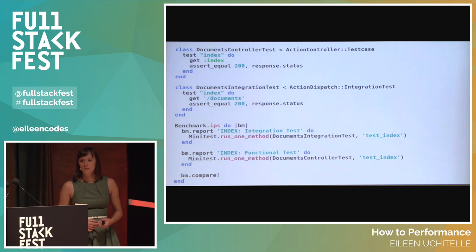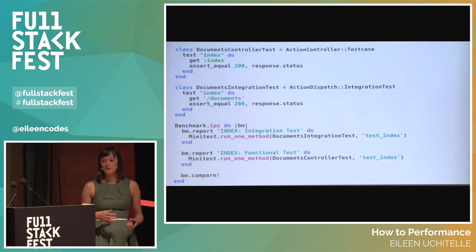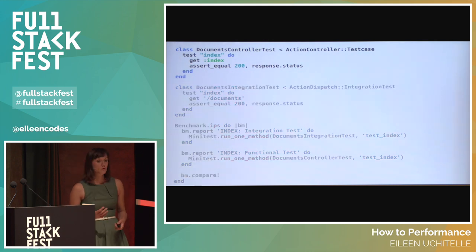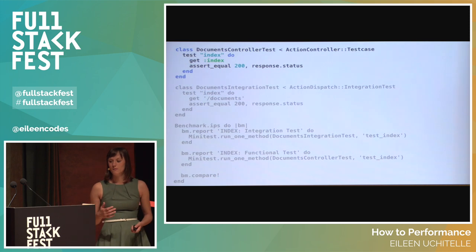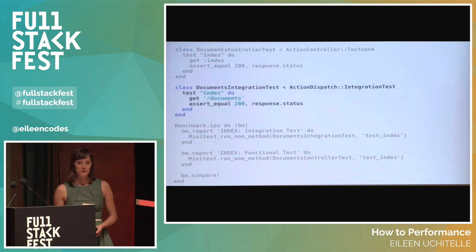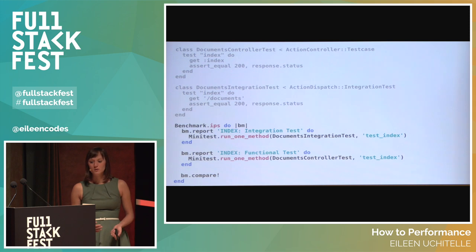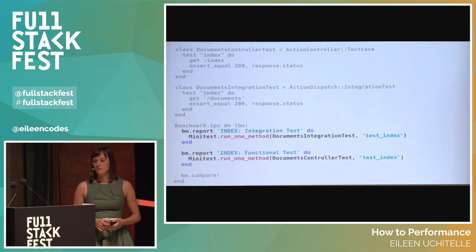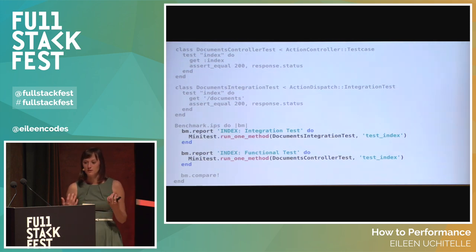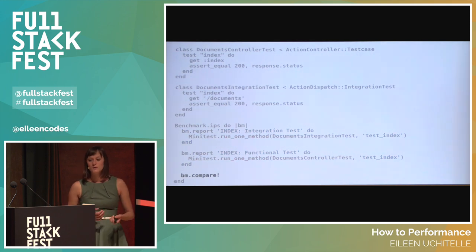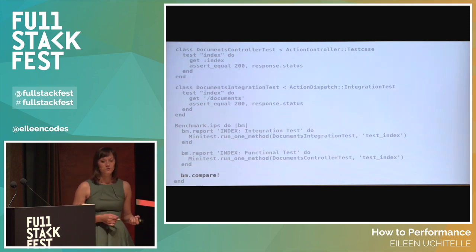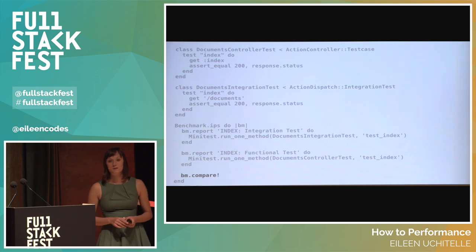Here's an example of the Benchmark IPS script I used to measure the difference between integration tests and controller tests. First we define the controller test — a simple GET — and we assert the response was a success. Then we do the same for the integration test: get the index route and assert the response was a success. We then invoke the Benchmark IPS gem. Inside the benchmark block, we report on each of the tests. Using Minitest's run_one method, we can call each of the tests inside the code and label them. We then use the compare! method to compare how many times slower integration tests are than controller tests.